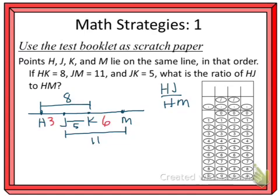Okay, so now what I need to do is find the pieces that it's asking for. So H to J, I already found, is 3 over H to M. So I need to add up the 11 and the 3, and I get 14.